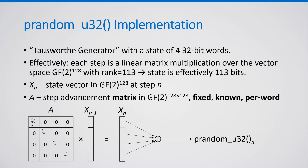pRandomU32 is a tau-swifter generator with a state of four 32-bit words, altogether 128 bits. In a PRNG step, a linear matrix is applied to the existing state vector to form the new state vector. This matrix has a rank of 113, so the state is effectively 113 bits. The matrix is fixed, known, and operates on the state vector on a word-by-word basis, so each word is advanced independently. The output of pRandomU32 is obtained by applying XOR to the four words of the state vector.